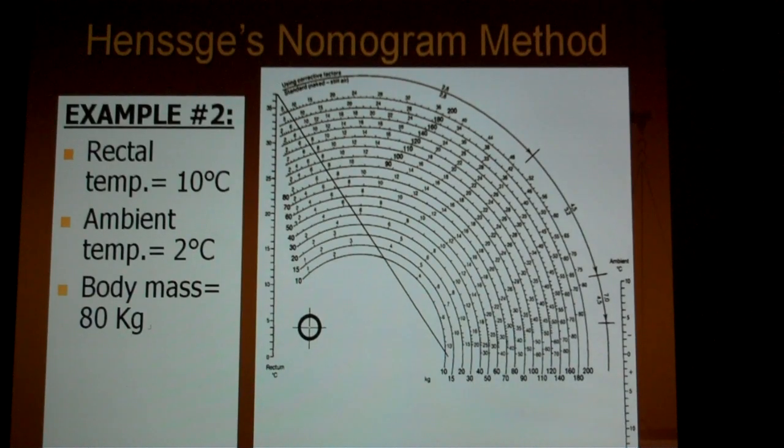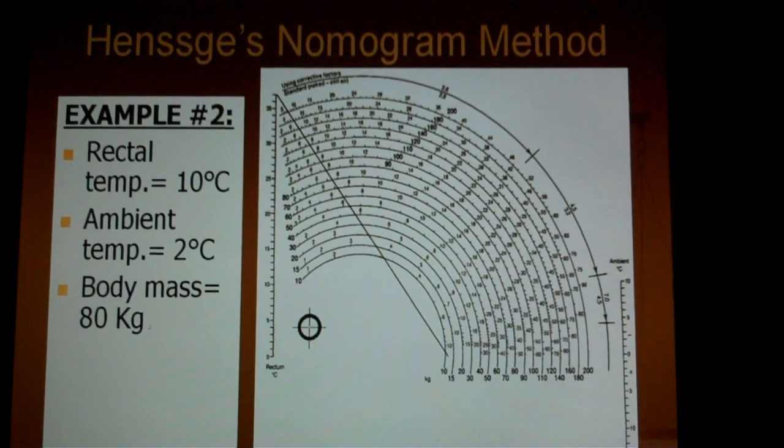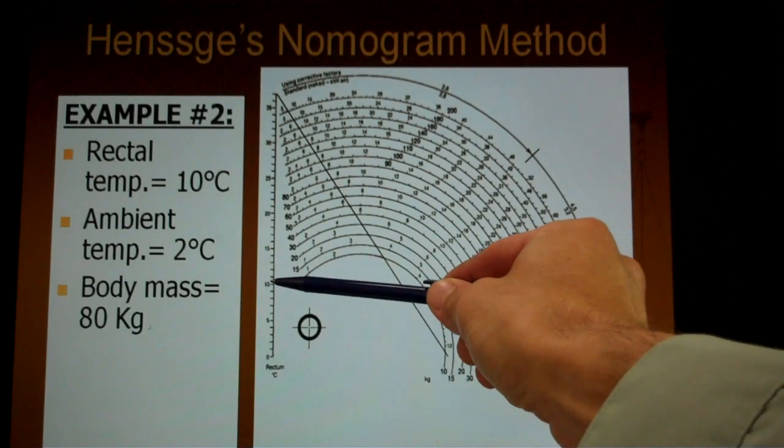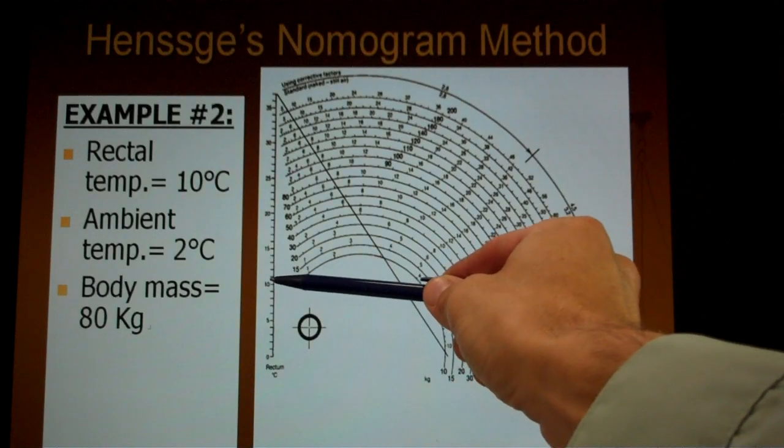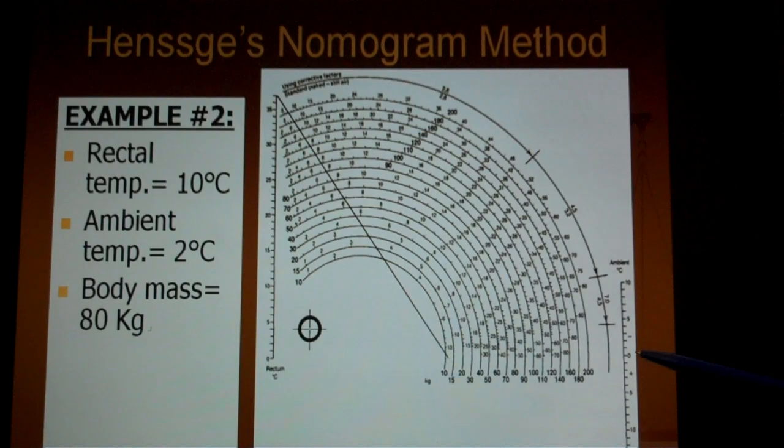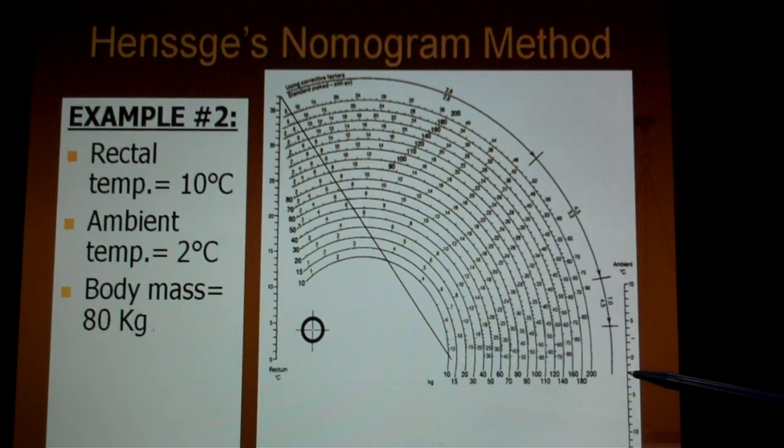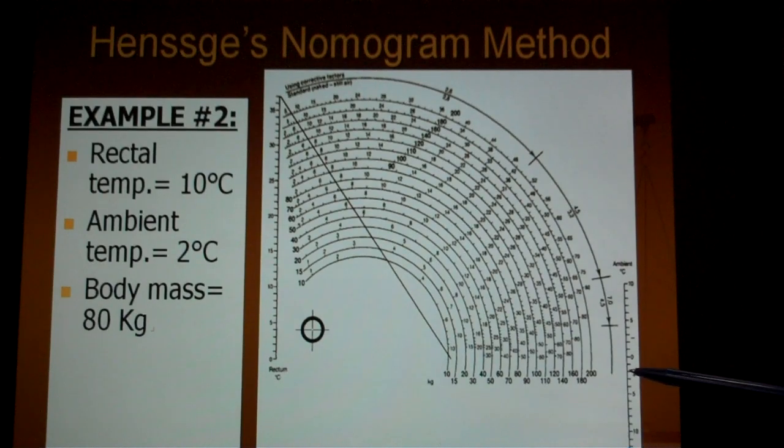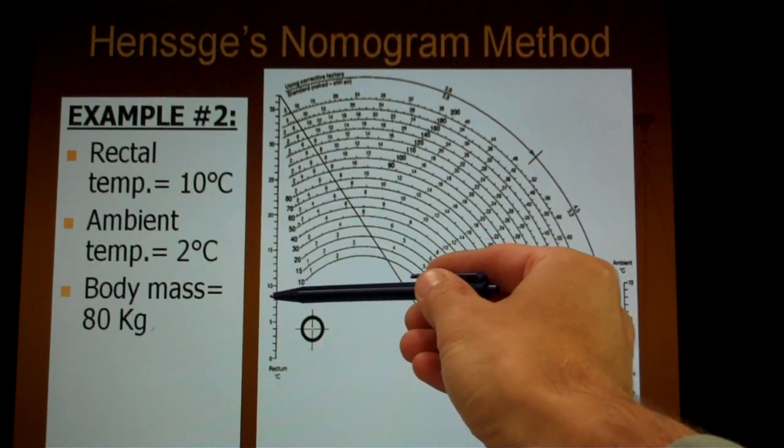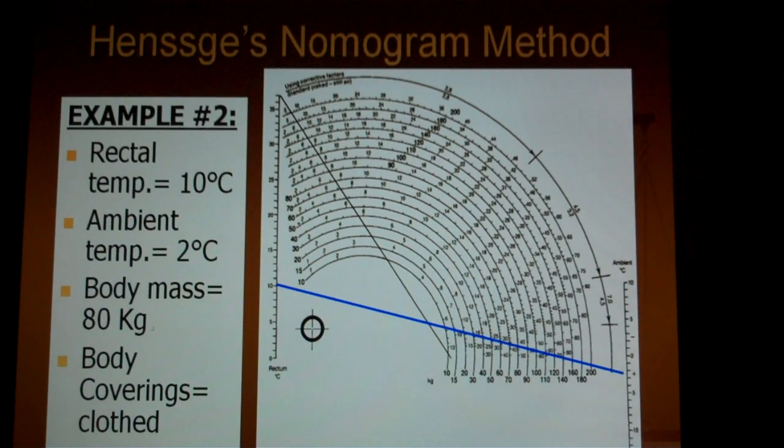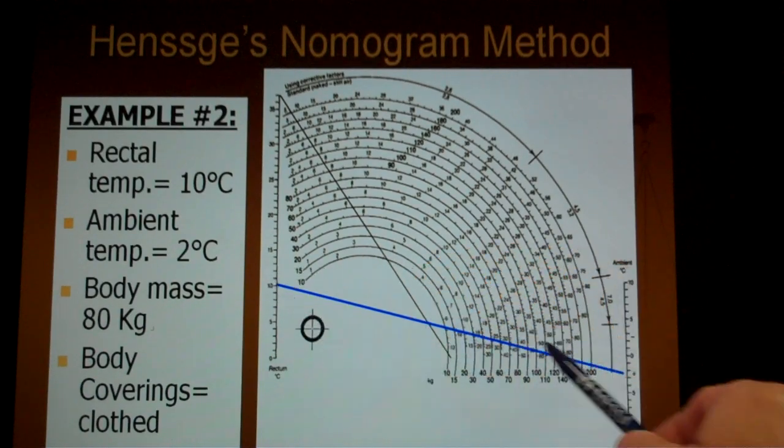The first two pieces of information you use are the rectal temperature and the ambient temperature. You may want to put a point along the side of the nomogram for each of these. In this case, the rectal temperature is 10, so I'd want to put a point up here at the 10. And then the ambient temperature is 2. So at the zero point, I need to go down to a positive 2, so about right here. So by placing a dot here and a dot at 10, what I would do next then is draw a line between those two points. So here's a blue line that I've connected between 10 and 2.